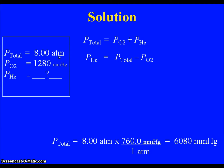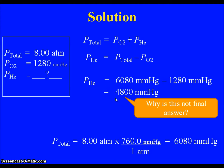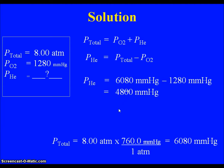Now we have a problem because our units of pressure are mismatched — one is in atmospheres, one is in millimeters of mercury. It doesn't matter which we change to, we just need to get them both the same. I decided to convert everything to millimeters of mercury. Taking my 8 atmospheres total pressure: since 1 atmosphere equals 760 mmHg, that gives 6080 mmHg total pressure. Plugging into our equation: P_helium = 6080 minus 1280, which gives 4800 mmHg. Now, why is that not our final answer? Sigfigs. When adding or subtracting, you look at decimal place. Both values are rounded to the tens place, so the answer has to go to the tens place — we need to put a line over that zero. That's a fairly straightforward Dalton's law problem: the total pressure is just the sum of the individual partial pressures.